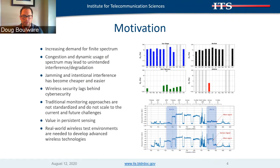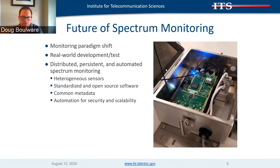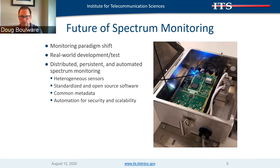Our experience has led us to the belief that in order to develop new monitoring capabilities and a broader suite of advanced wireless technologies, we need a real-world research and development environment. We're actively working to bring about a new future for spectrum monitoring — fundamentally changing the way we perform this monitoring. We've established a real-world R&D environment known as the Boulder Wireless Test City, and we're using it to develop a distributed, persistent, and automated spectrum monitoring capability. This system is built on heterogeneous sensors utilizing standardized, open-source software, providing common metadata, and using automation for security and scalability.